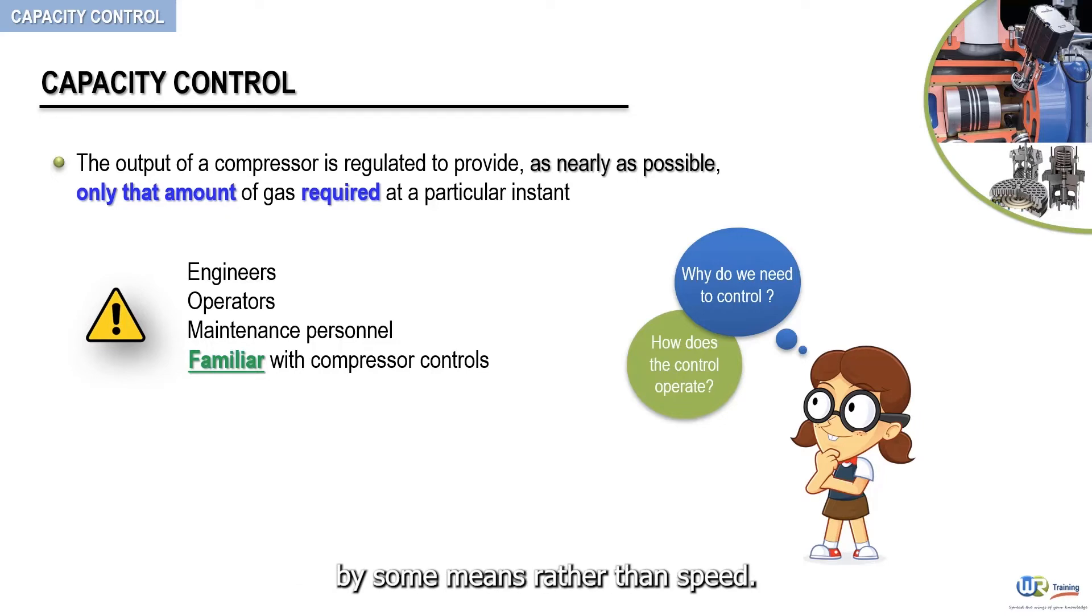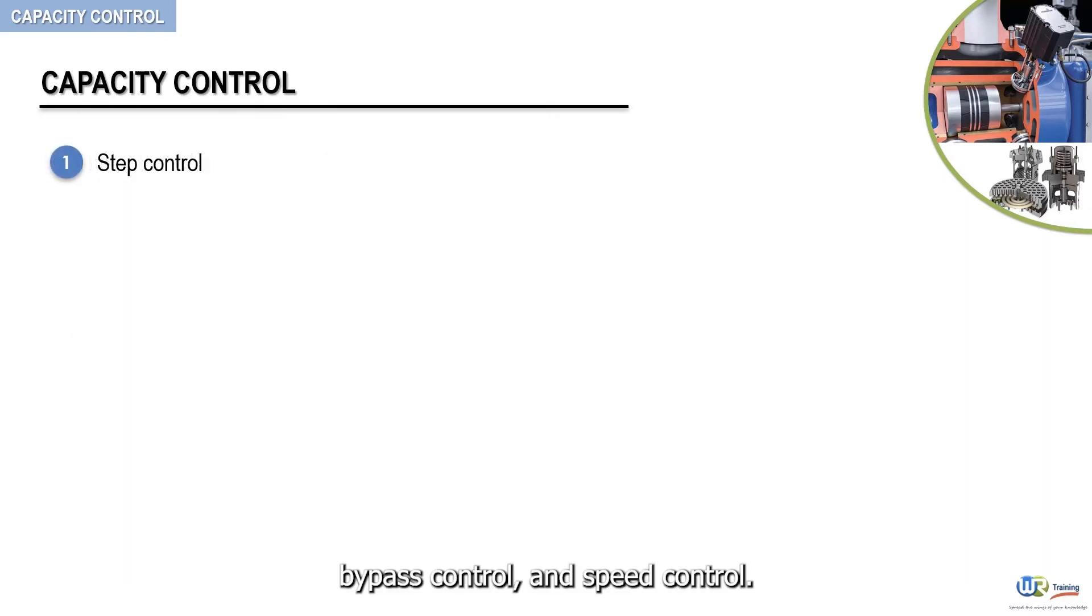There are actually three common methods to control the capacity of a reciprocating compressor. First we list them, then in the next couple of videos we will discuss each one in detail. These capacity control methods include step control, bypass control, and speed control.